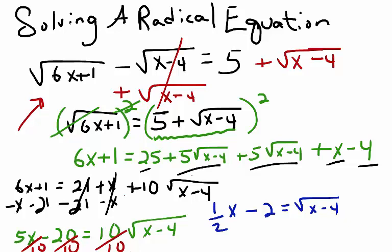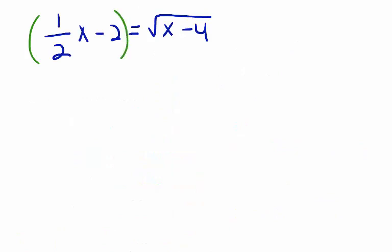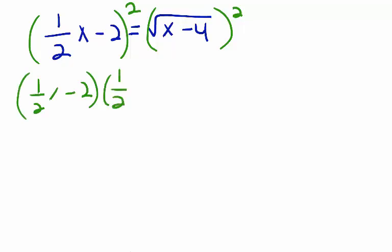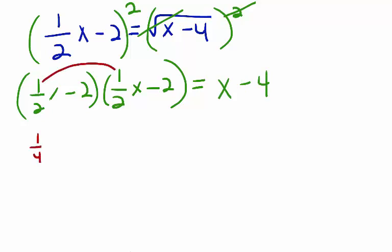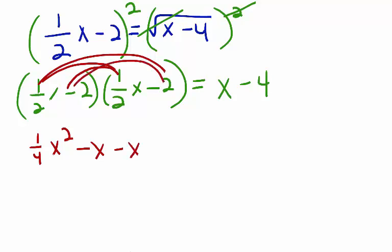Now I'm going to square both sides again. Here I have one-half x minus 2, times one-half x minus 2. Once again we have a binomial squared, which means we're going to use the FOIL method to distribute. The square root of x minus 4 squared gives us just x minus 4. Simplifying the left side: one-half x times itself gives one-fourth x squared. One-half x times negative 2 gives negative x. Negative 2 times one-half x gives negative x. And negative 2 times negative 2 gives plus 4. All equal to x minus 4.